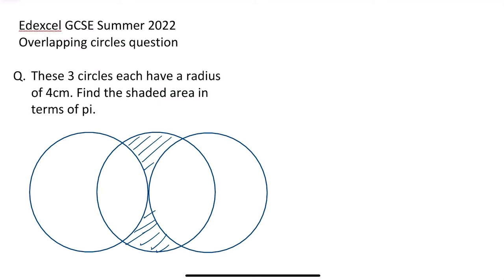The question says these three circles each have a radius of 4 cm, find this shaded area in terms of pi. If we have a look at this, at first glance it looks very difficult. You've got three circles, each have a radius of 4, and you've got to find these shaded areas. So there's this area here and also this area at the bottom.